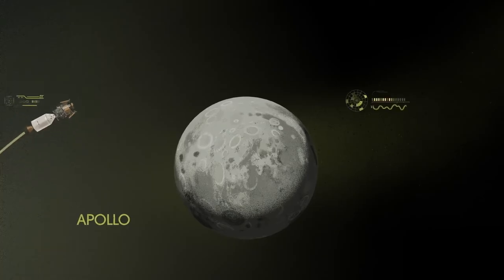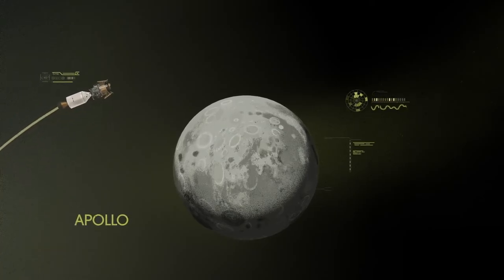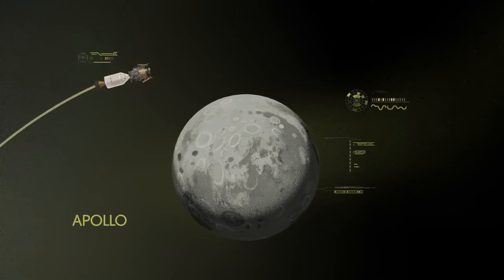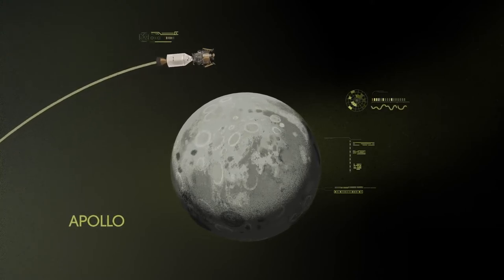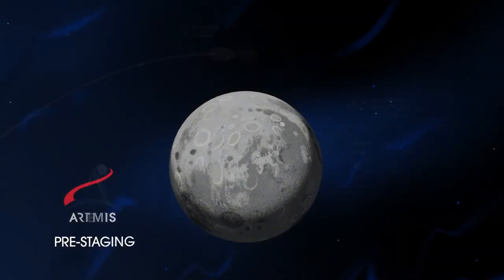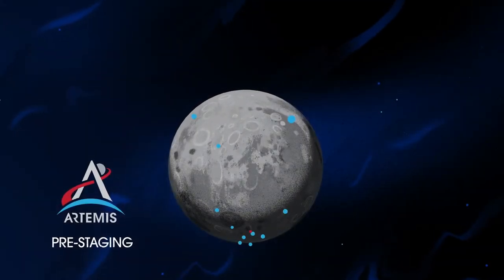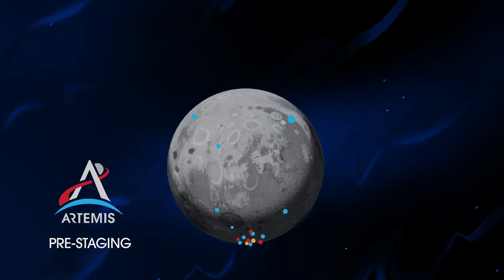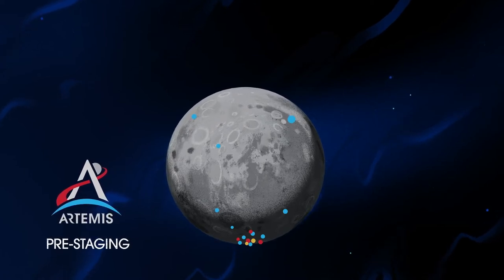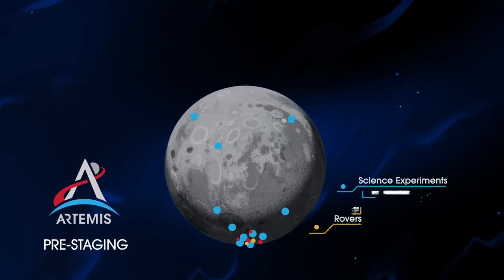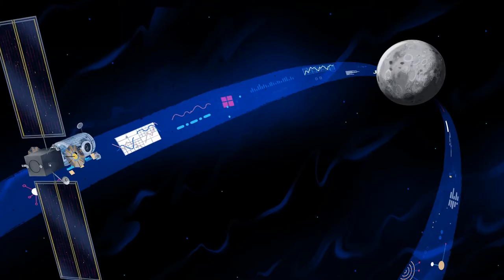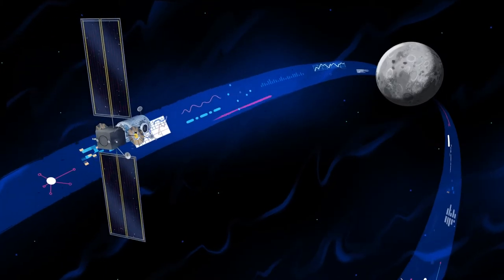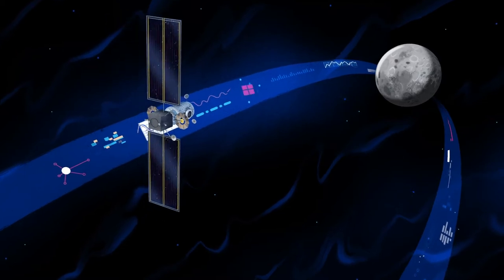Instead of requiring Orion to serve as an expendable lunar command module or to carry a constrained lunar lander, the Artemis missions will take advantage of a different approach, pre-staging. Everything needed for lunar missions will be positioned in advance by commercial and international partners. This includes rovers, science experiments, and human-rated systems on the surface. But it also includes a dedicated lunar station in orbit around the Moon called Gateway.